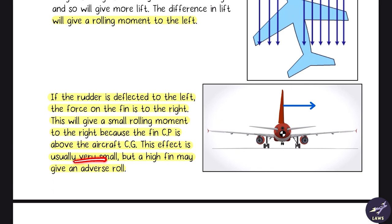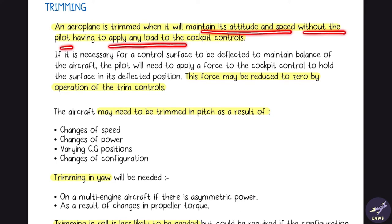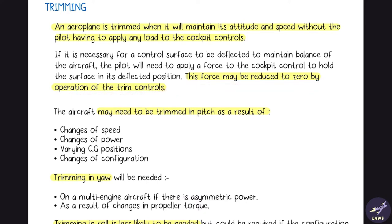Next is trimming. An aeroplane is said to be trimmed when it will maintain its attitude and speed without the pilot having to apply any load to the cockpit controls. This force may be reduced to zero by the operation of a trim control — basically the pilot can fly the plane hands-free.